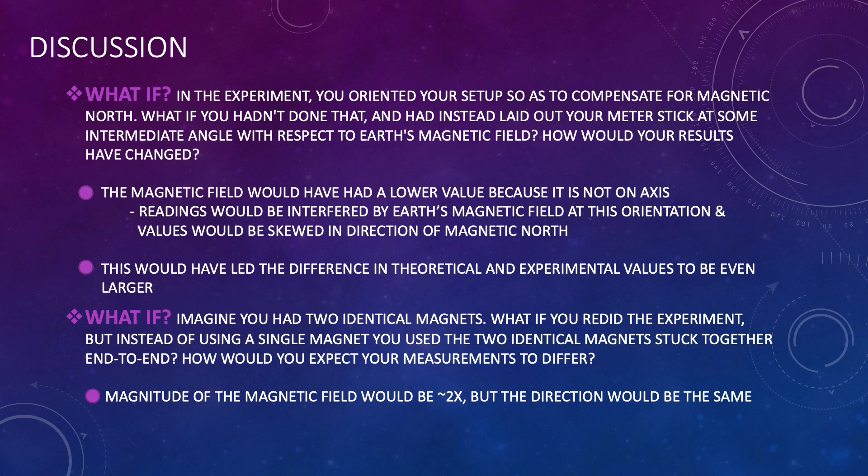Also if we had two magnets instead of one we would assume that the magnitude of the magnetic field would be larger and we would intuitively assume that it would be close to two times but the direction would be the same.